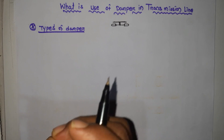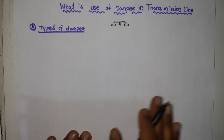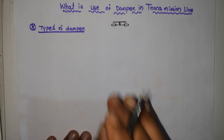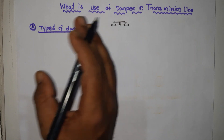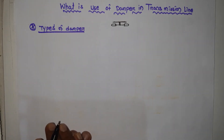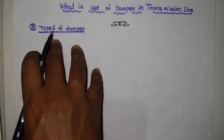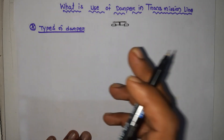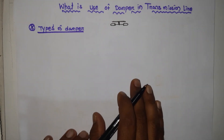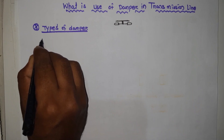We also discuss what is the importance of the damper in the transmission line. Basically, damper is provided to control the oscillation. But first we discuss how many types there are and where they are used. Basically there are three types of damper.